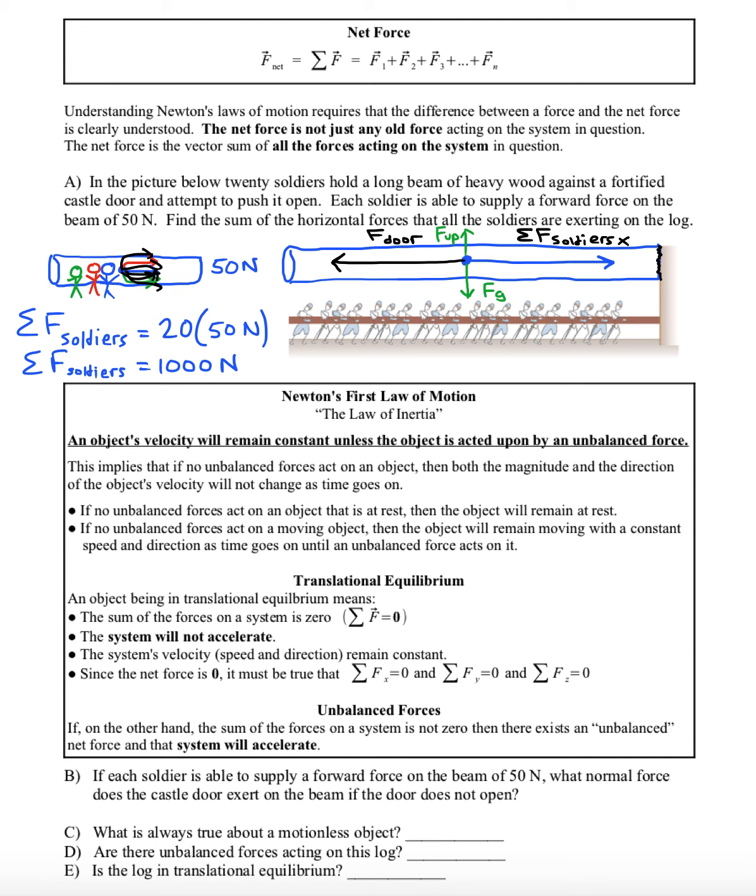So let's answer the remaining questions. If each soldier was able to supply a forward force on the beam of 50 newtons, what normal force does the castle door exert on the beam if the door doesn't open? I had answered that already. The normal force of the door on the beam is going to be 1000 newtons, to match the forward force that the soldiers are pushing with.